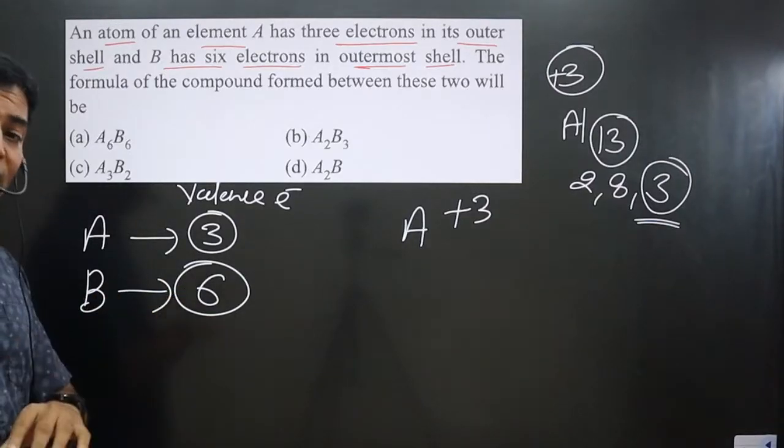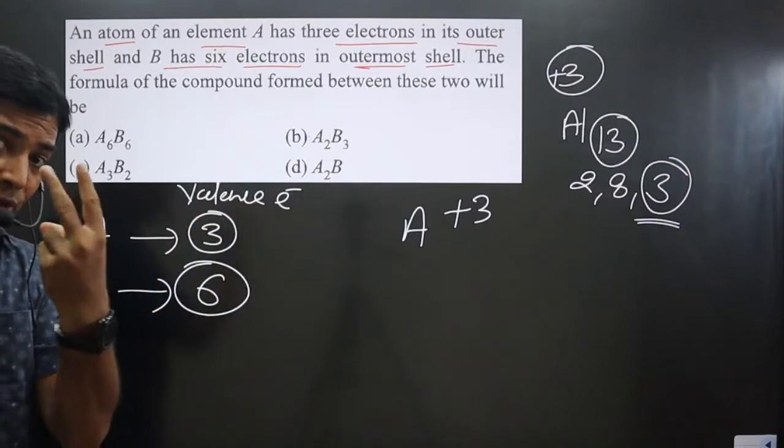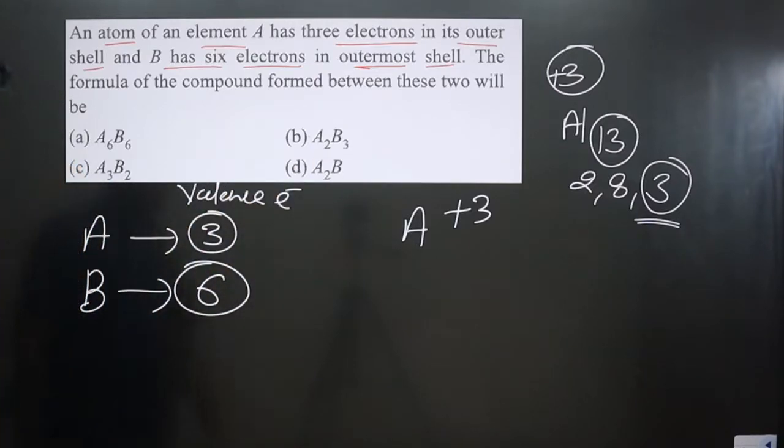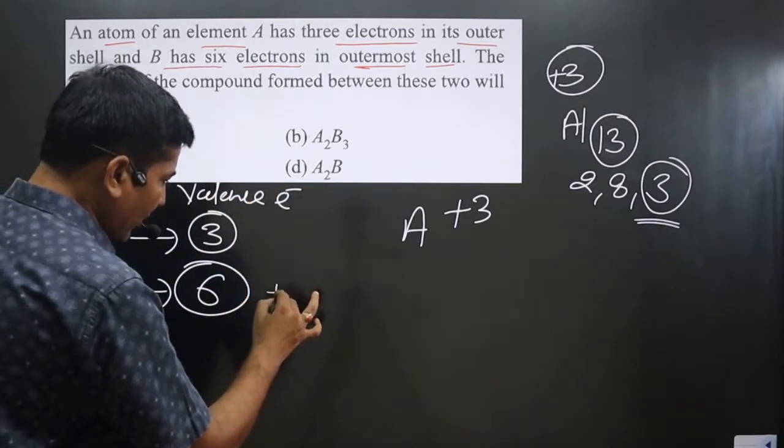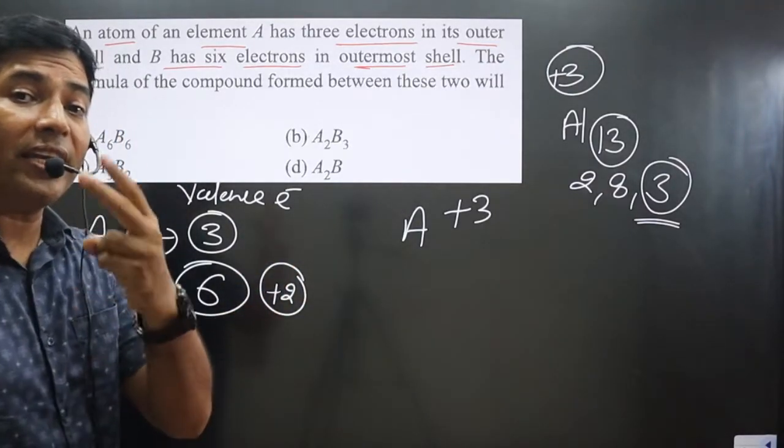So here, this A has plus three charge because it has three valence electrons. Then B is having six valence electrons. To complete its octet, it has tendency to gain how many electrons? Two. And since it is gaining two electrons, it will carry minus two charge.